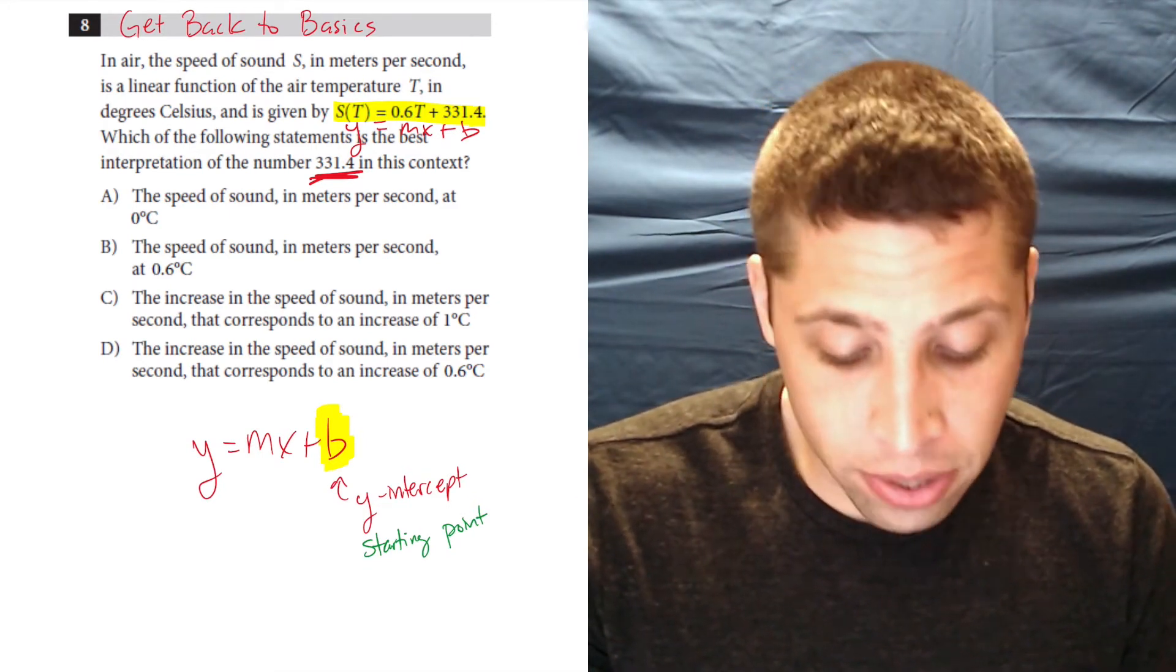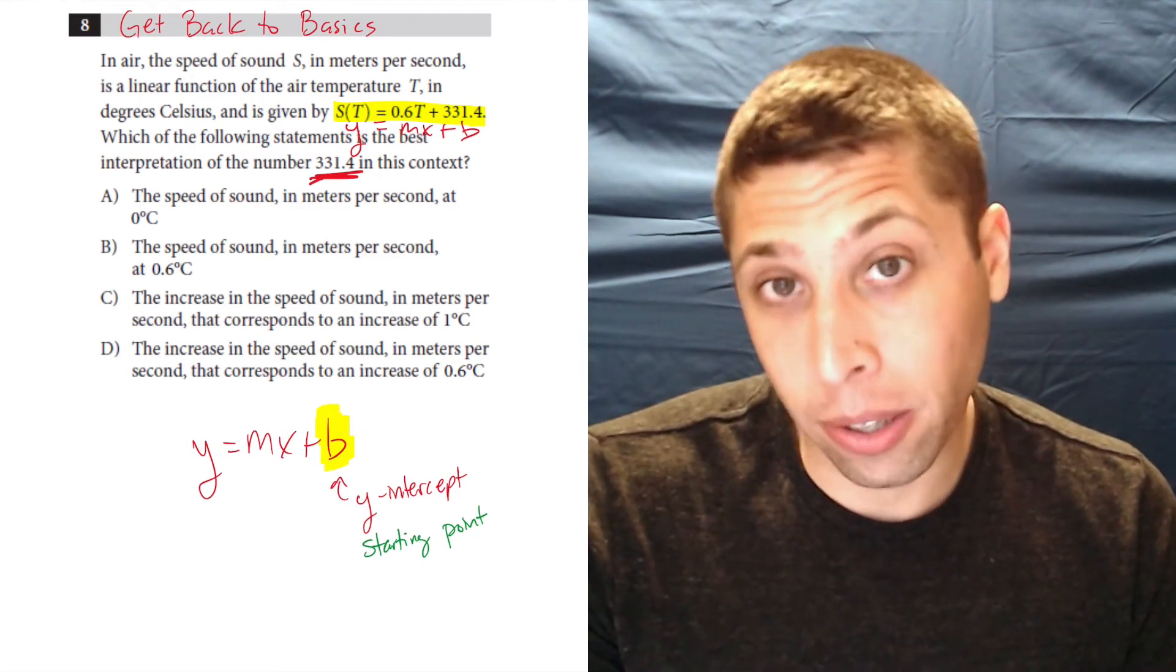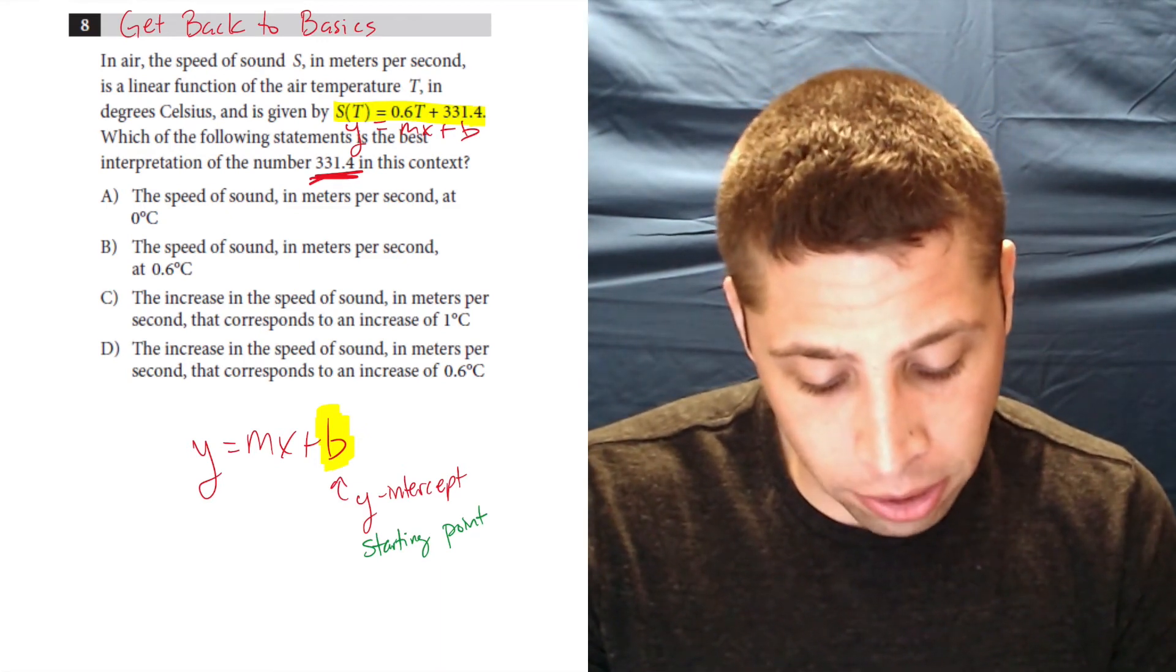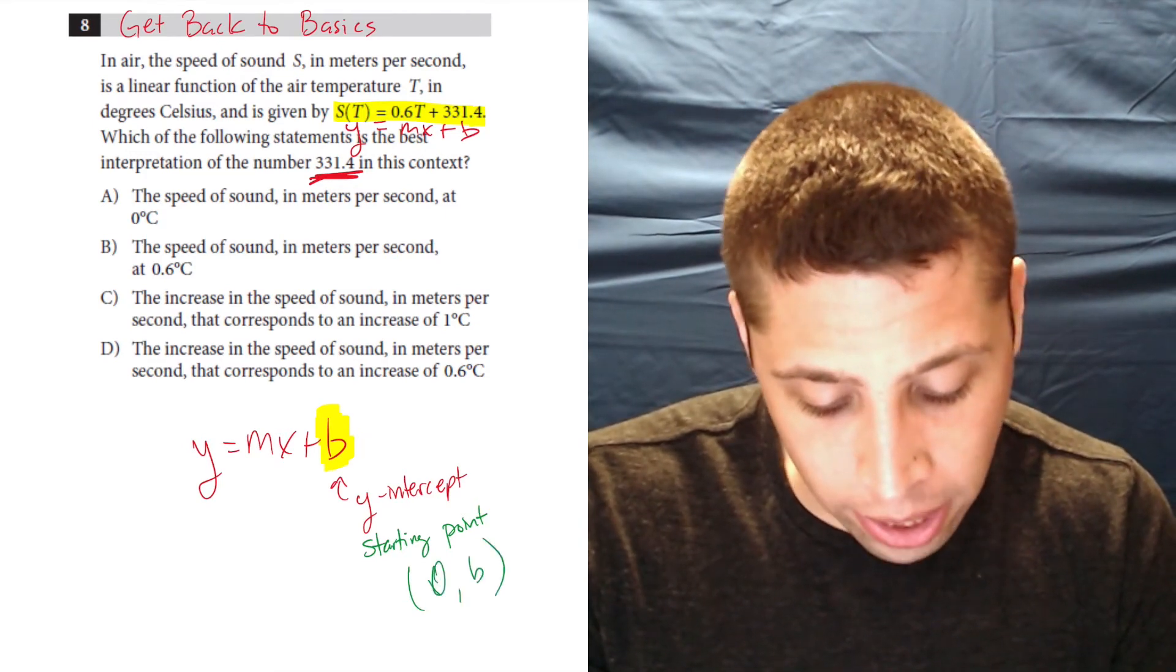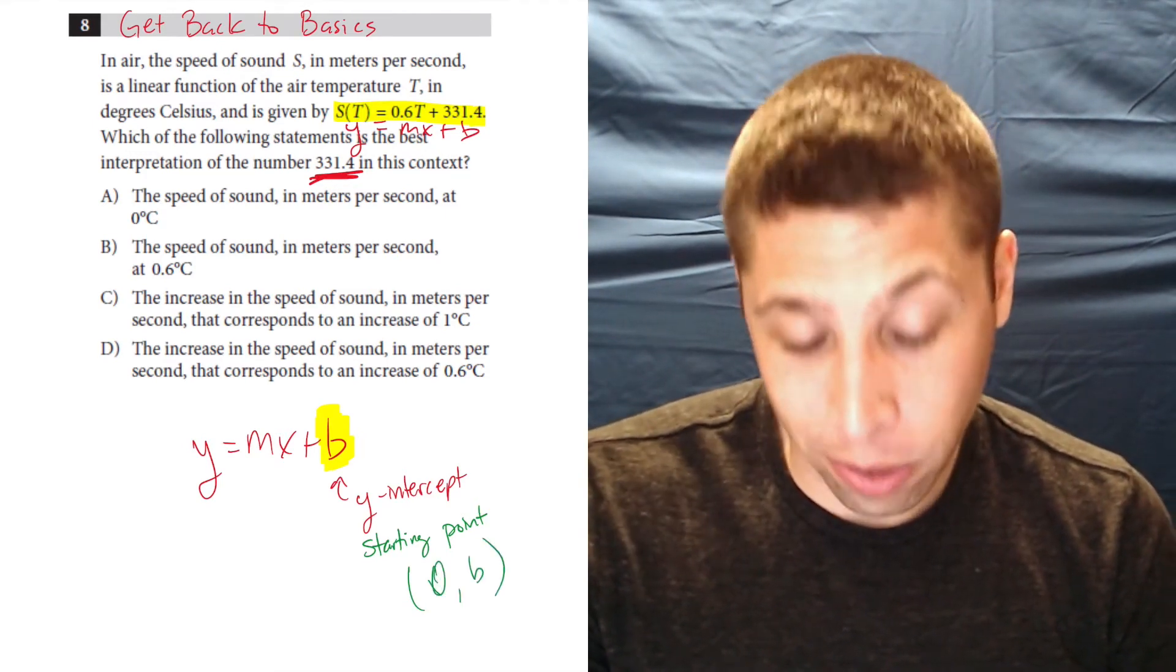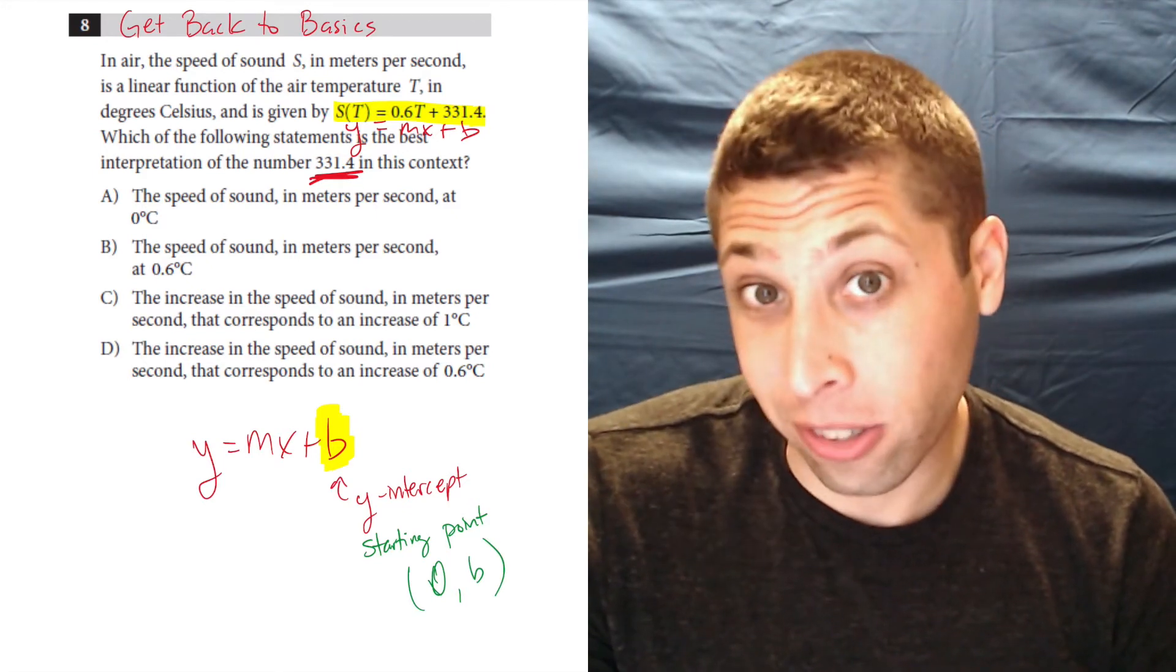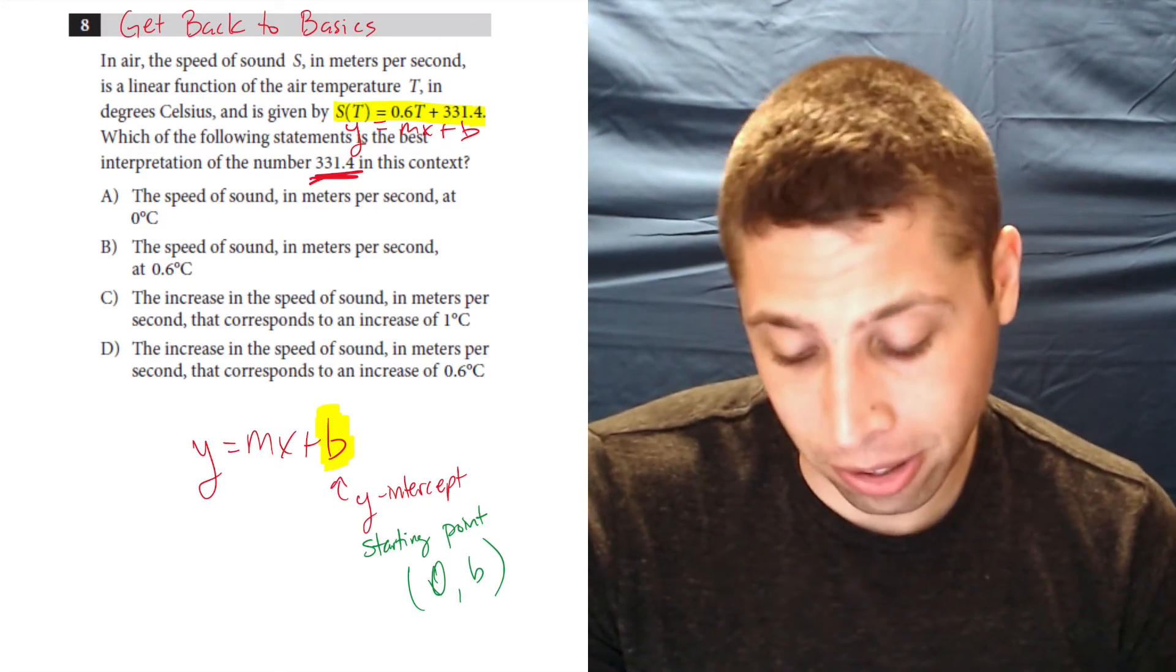So, A, the speed of sound in meters per second at zero. Well, zero is kind of like a starting number, and it helps that a y-intercept always has a zero x-coordinate, and then the b is the y-coordinate. So there's, it looks, that already sounds like a y-intercept, but let's look on.